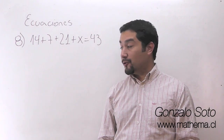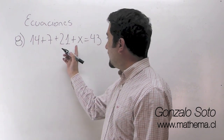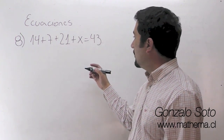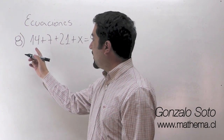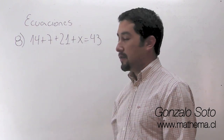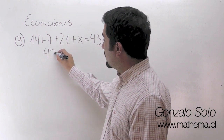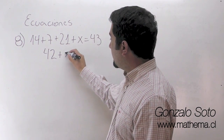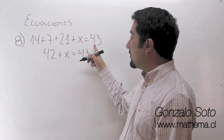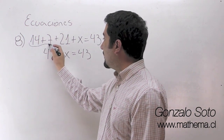En el ejercicio 8 lo que tenemos es lo siguiente: a este lado donde está la x existen tres números y lo primero que vamos a hacer es sumar esos números. Entonces 14 más 7 es 21 y 21 más 21 es 42, más x es igual a 43. La x la mantenemos, el 43 lo mantenemos, solamente lo que hicimos fue sumar los números.